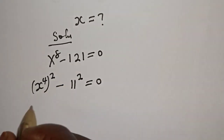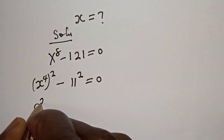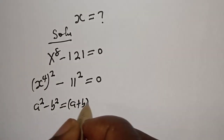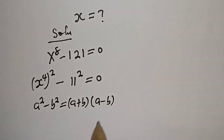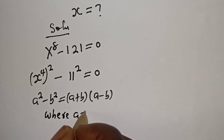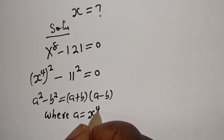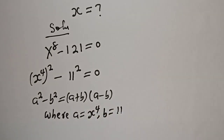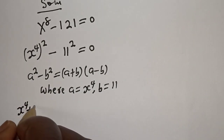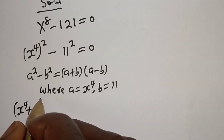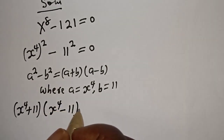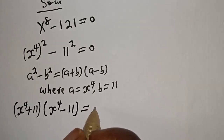Now, if you look at this, this is the difference of two squares. If you have a squared minus b squared, it is equal to a plus b multiplied by a minus b. Here, a is equal to s raised to power 4 and b is equal to 11. So, s raised to power 4 plus 11, multiplied by s raised to power 4 minus 11, is equal to 0.